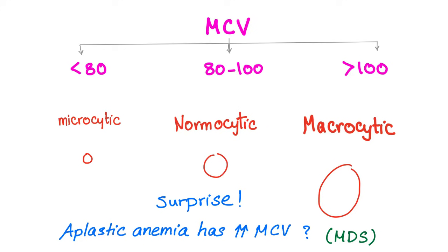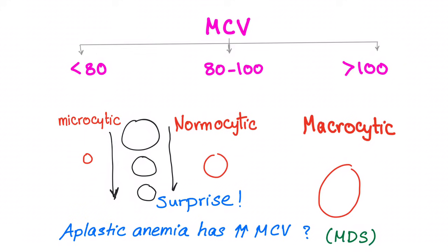There may be another reason. The RBCs, when they are synthesized, start big and as they mature they get smaller. So if you have a problem with your bone marrow, you cannot follow these steps — you will end up with big cells, progenitor cells, precursor cells. Large cells will give you high MCV. That's another reason or maybe a probability.